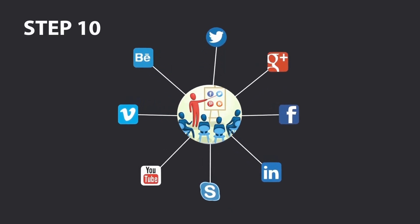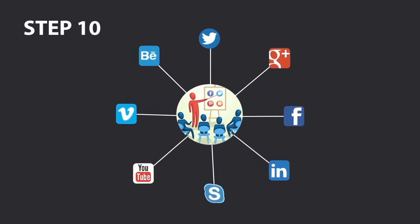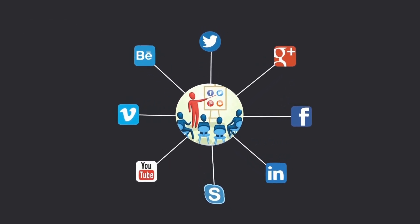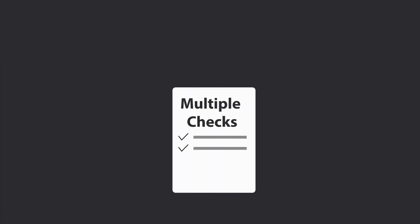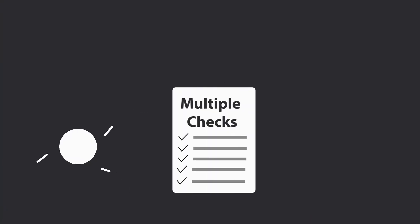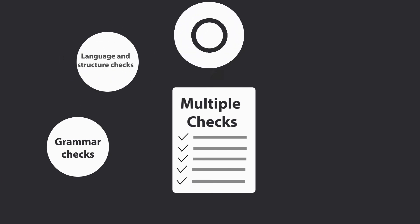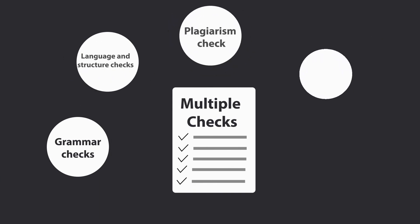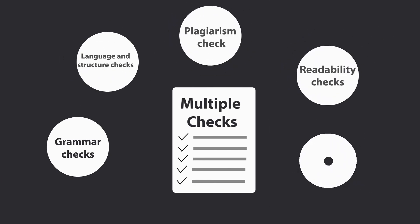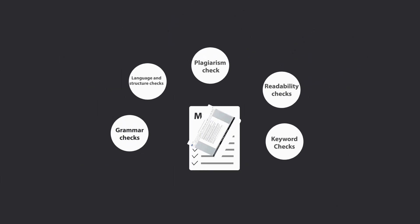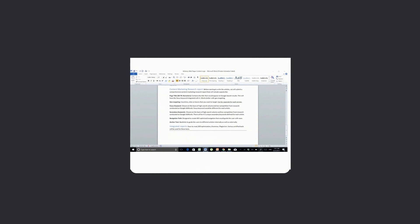Step 10: SEO review. Digital marketing experts from our team review the content for seamless integration of all SEO aspects in the content. The content is then passed through grammar and language checks, plagiarism and readability checks, and keyword and other SEO checks using various SEO audit tools and plugins.